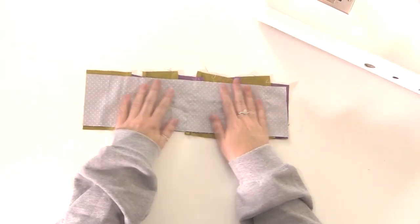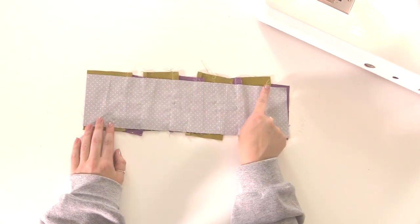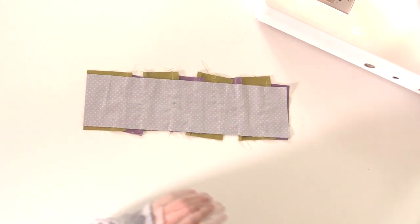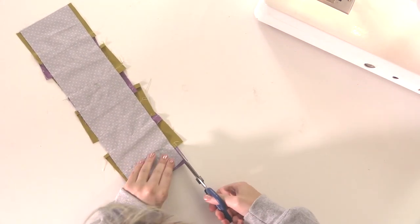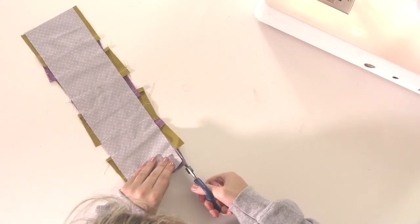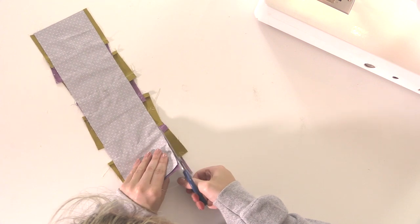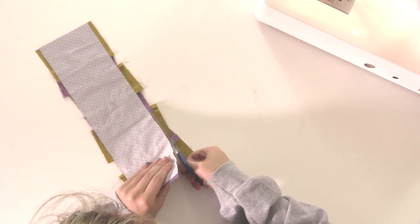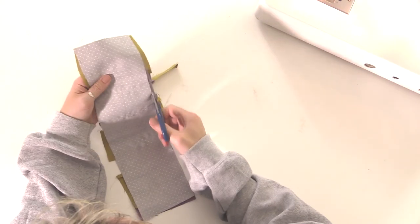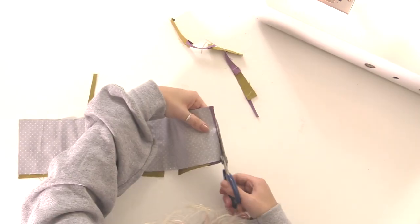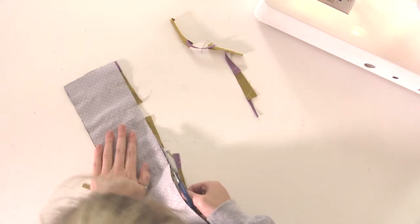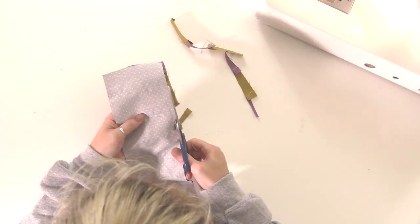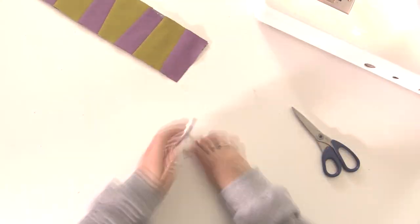So now you've got all your strips sewn to the scrap, you're going to want to trim back the edges so that it's nice and square. And this is the panel you'll end up with.